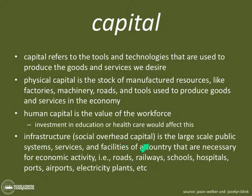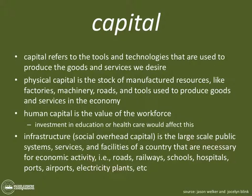The second aspect of capital is infrastructure, also called social overhead capital. Infrastructure is the large-scale public systems, services, and facilities of a country that are necessary for economic activity — roads, railways, schools, hospitals, ports, libraries, electricity plants. It's the physical stuff that makes a country work economically. The better the roads in a country, the more easily trucks can get from A to B, the cheaper it costs to move goods, and as a result, the lower prices will be. The most highly developed nations have incredible infrastructure — you see this most readily in European countries, which are super efficient despite having a finite amount of land.